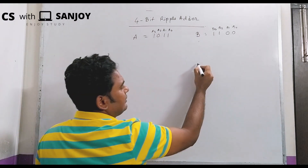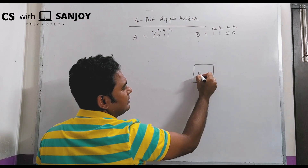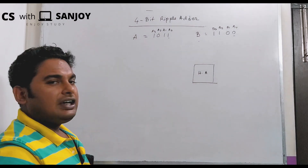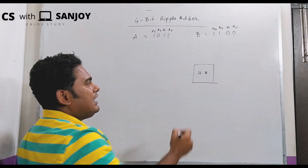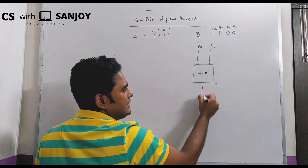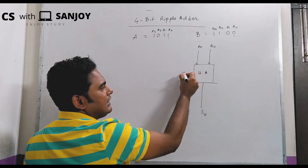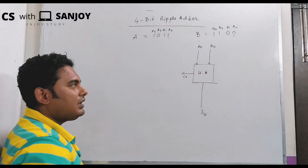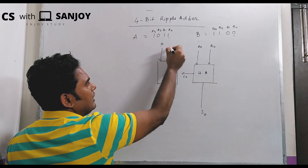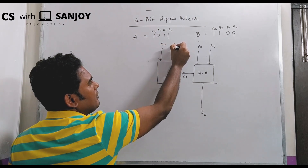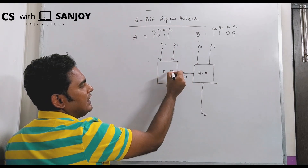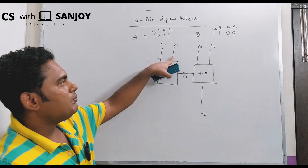Now see this — we consider this as a half adder, because a0 and b0 add and that is a two-bit adder. This is a half adder: a0 plus b0. The sum is s0 and the carry is c0.